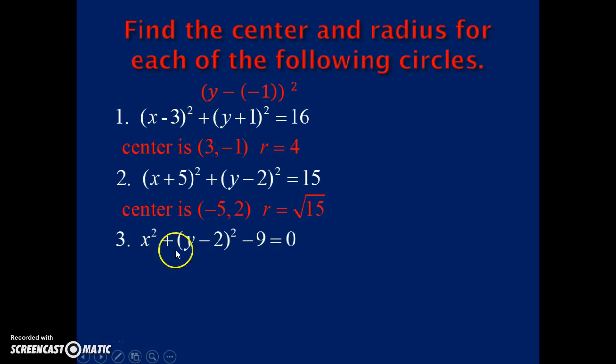The center for circle number 3 is H equals 0, K equals 2. We don't have this in standard form because the constant is on the left side of the equal sign and the radius squared is always on the right side of the equal sign. So we need to move that negative 9 over here algebraically and make it positive 9. And therefore, our radius would be 3. So sometimes we have to do just a little bit of algebraic manipulation to get it into the form where we can recognize the center and recognize the radius.